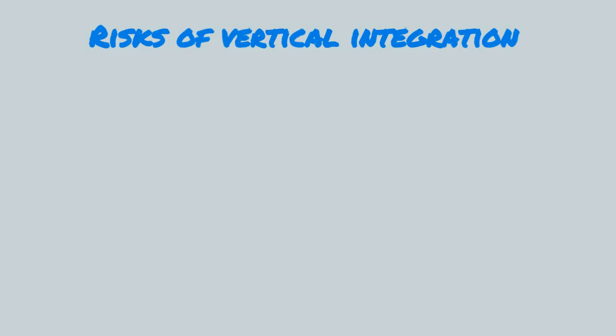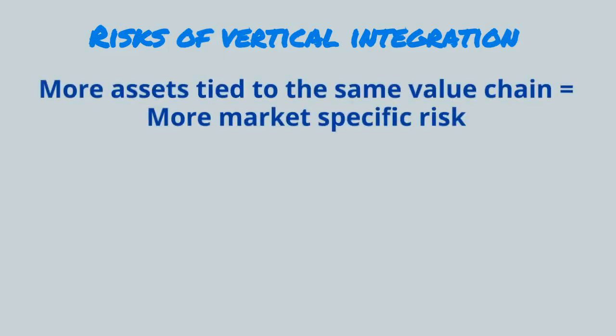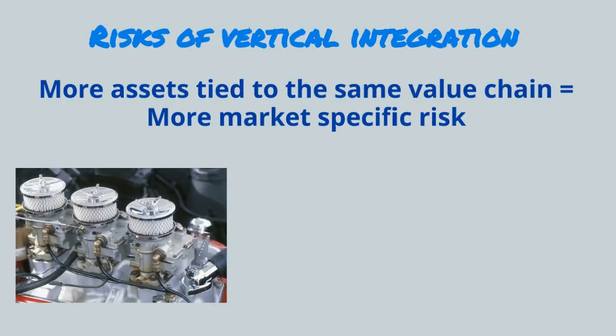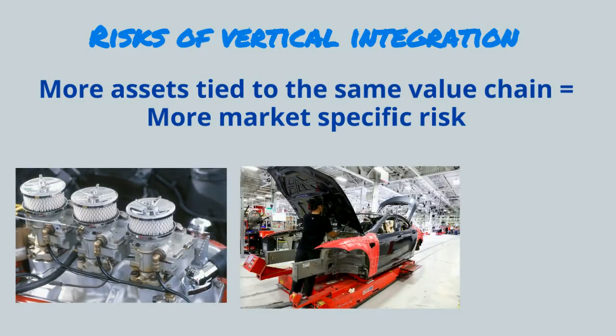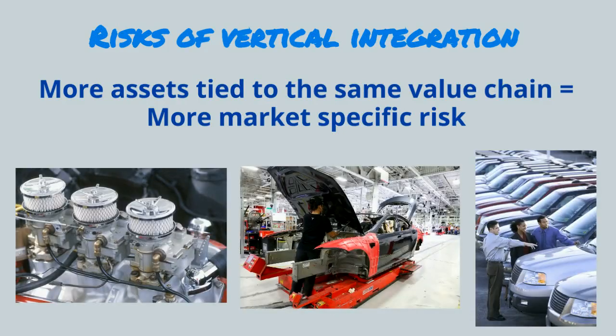Vertical integration also has risks. One risk is that you have more assets tied to the same value chain, meaning more market-specific risk. For example, if you make auto parts, manufacture automobiles, and own your own dealerships, you are more susceptible to downturns in auto sales.